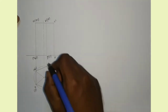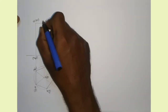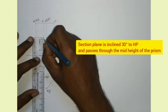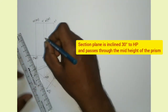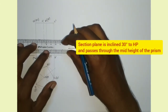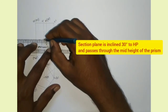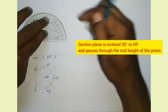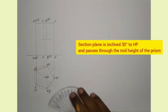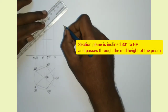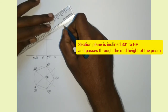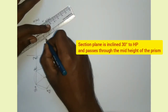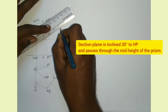I am naming the axis as O'P'. The section plane passes through the midpoint of the axis, so I am marking the midpoint of the axis. Now I am drawing a line which is inclined 30 degrees to HP. Using a protractor, I am drawing a line which is 30 degrees inclined to HP. That is our section plane, so we have to draw a chain thin line, inclined 30 degrees to HP and passing through the midpoint of the axis.